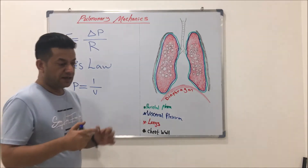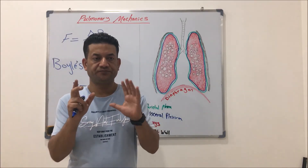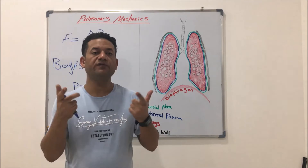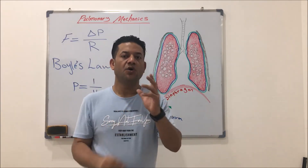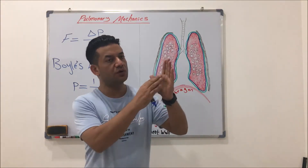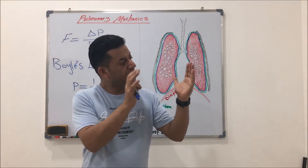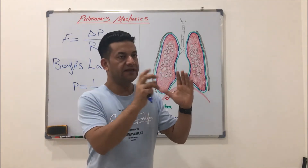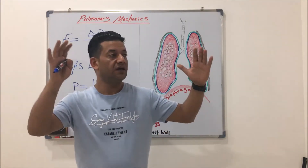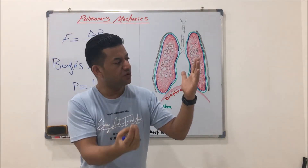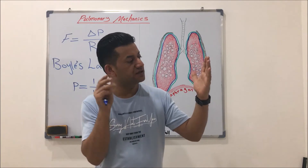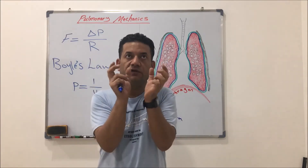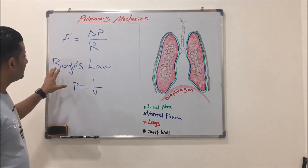In other words, if we have some amount of gas placed in a container, the molecules of that gas will cause pressure on the wall of the container. If that same gas is placed in a larger container, the pressure caused by the molecules of gas on the wall of the container will be less than that in the smaller container. This is Boyle's law.